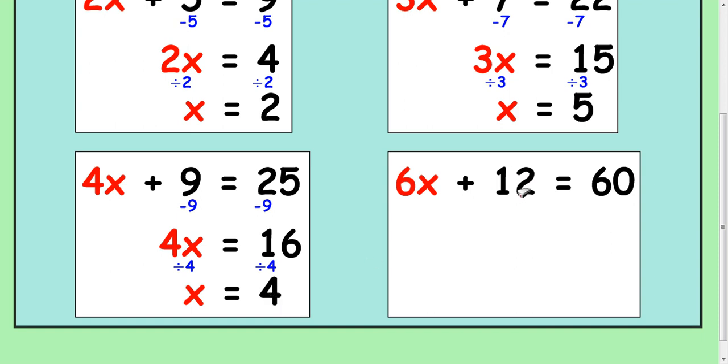Finally, we want to take away the 12 pieces here, and do the same to the other side. So we're left with 6x, and that's going to give us 48. And to get 1x, you divide by 6. So do the same here, and you're going to get 8.